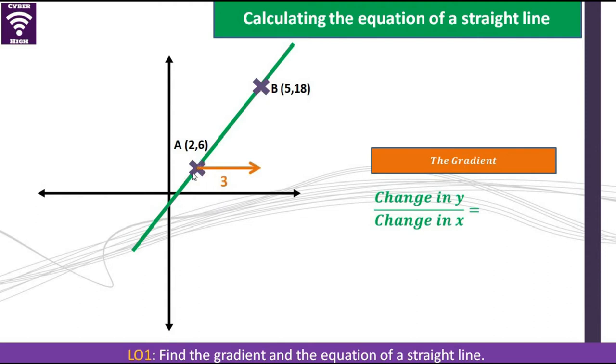So let's see the difference in y and difference in x. So difference in x points when you go horizontal. So this is 3, 5 minus 2 gives us 3. And for the y, 18 minus 6, and this gives us 12. So we have 12 over 3, which gives us 4 as our gradient.